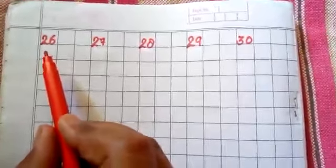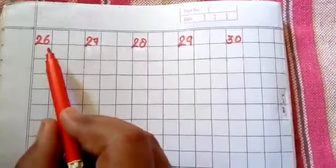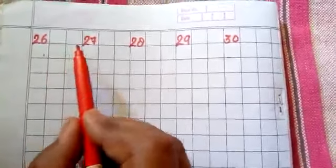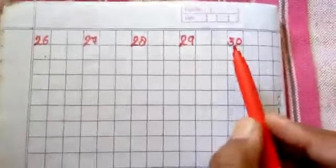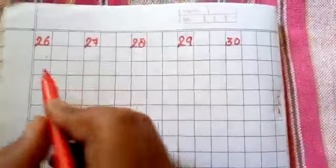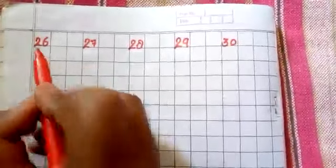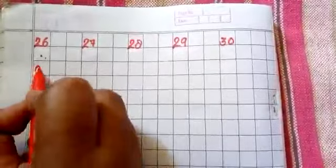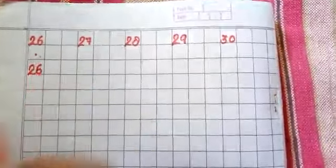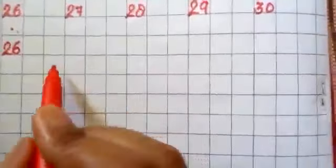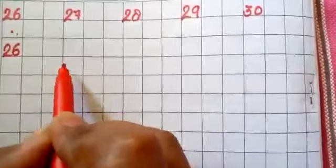इन numbers को copy में proper block में write करते हैं. Okay? Two digit number है, but single block में ही रहेगा. And two, two blocks का space रहेगा, जैसे कि आप लोग करते आएं. One block space रहेंगे, two, six, 26, two blocks sleep करेंगे.